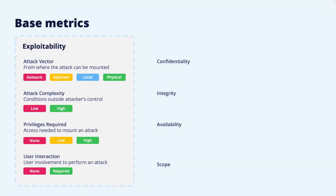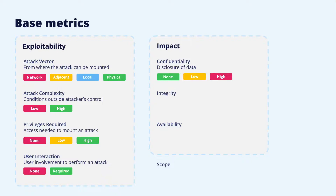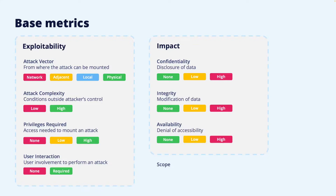The second metric group consists of impact metrics. The impact of a successful exploit is measured in confidentiality, integrity, and availability, each having its own impact metric. Confidentiality measures to which extent data is disclosed to an unauthorized attacker. Integrity similarly measures to which extent an attack can modify or delete data. The availability metric refers to the denial of accessibility of information resources. All three impact metrics can have the value none, low, or high, depending on the extent to which an attack would impact each of them.